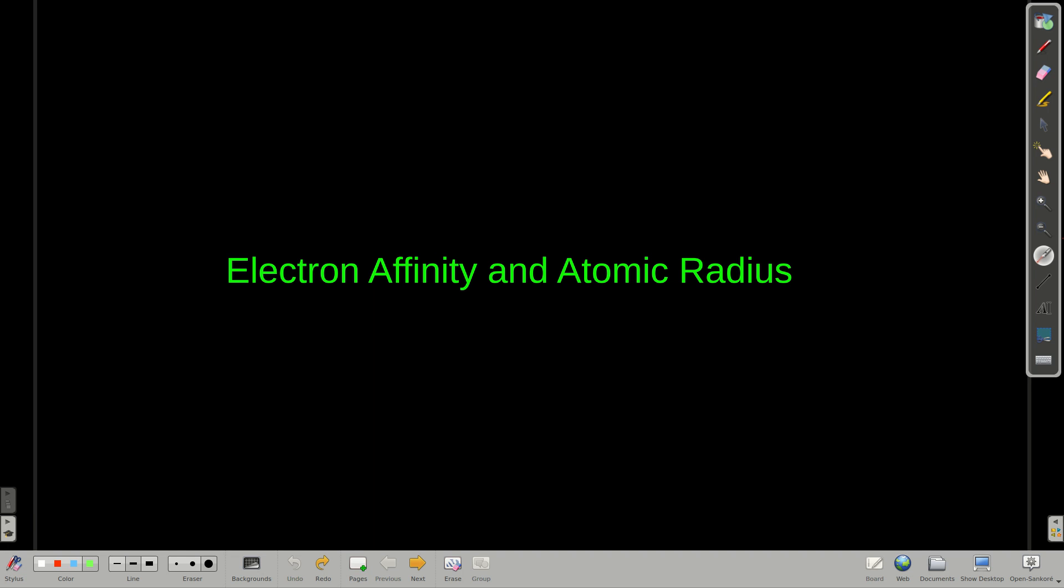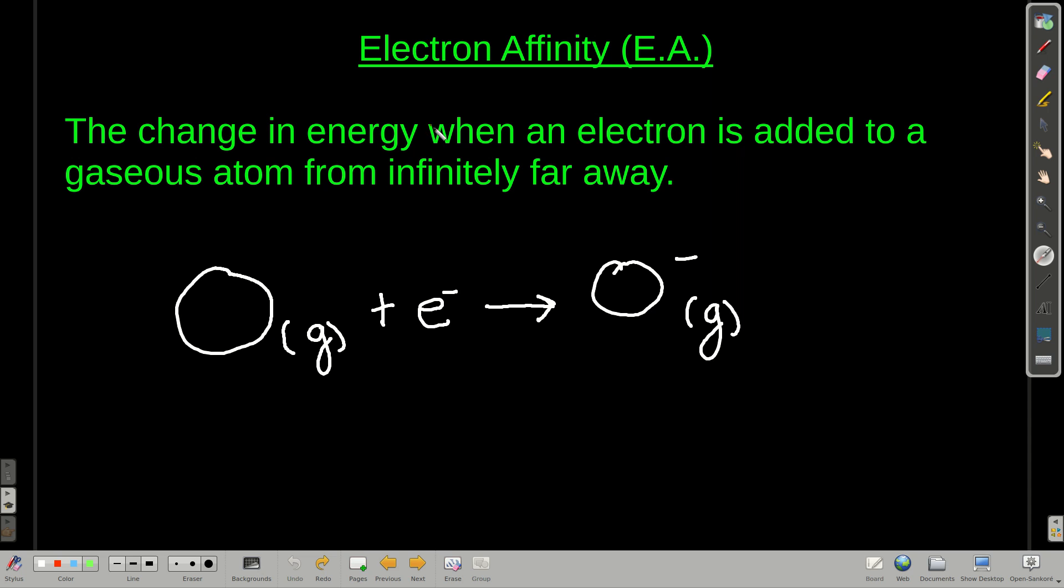In this module, we're talking about electron affinity and atomic radius. We'll also look at the trends of these properties in the periodic table. So first, the definition. What is electron affinity?